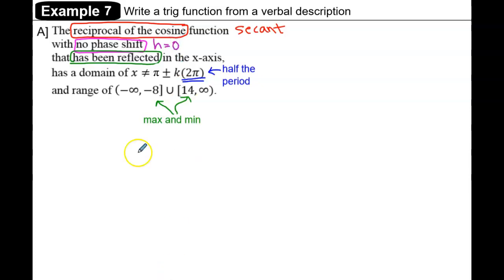Has been reflected in the x-axis tells me that the a value is negative, so a < 0. It has a domain of x ≠ π ± k(2π).